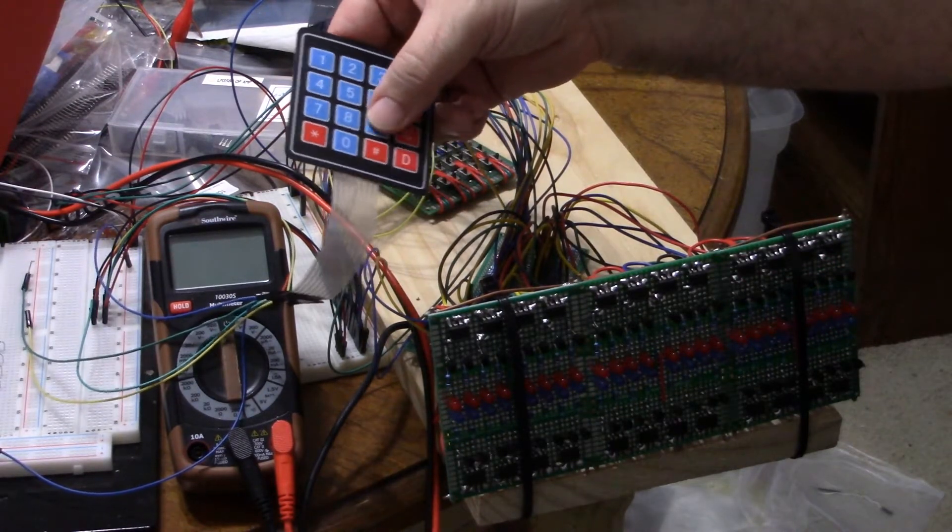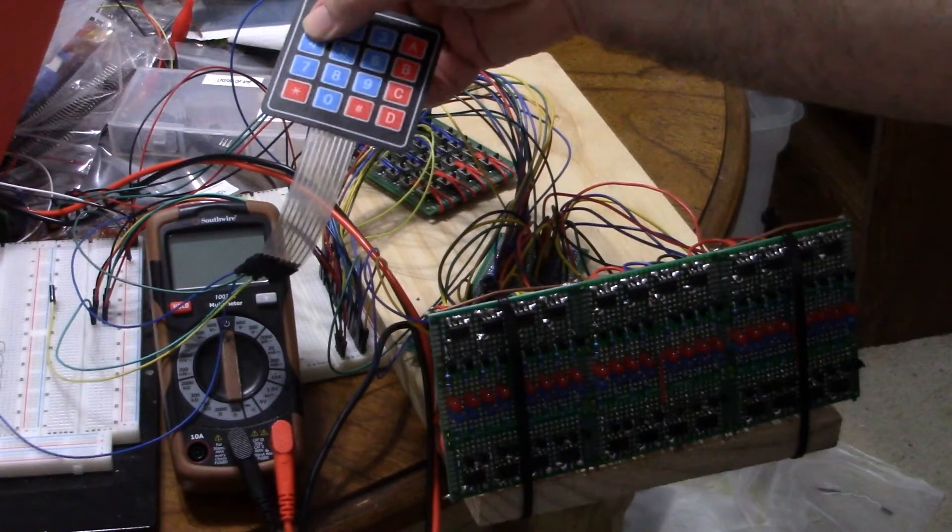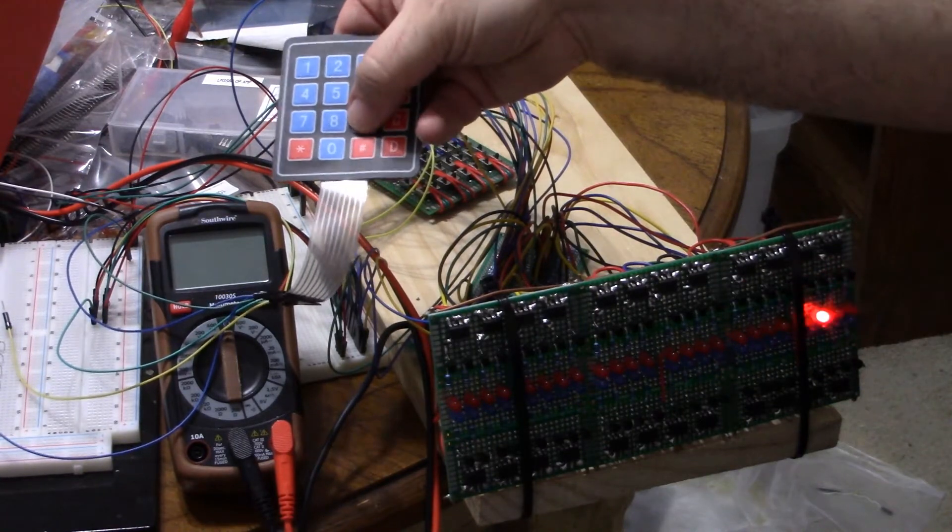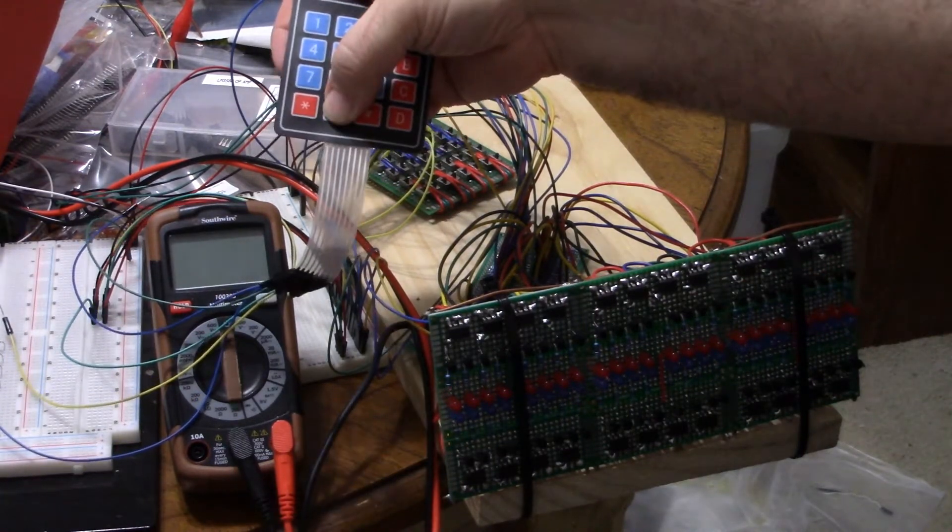If I press any other button, nothing lights up. If I switch to a different row, let's see, that was row three. So now row three is lighting up, one light at a time, and nothing else will light up.